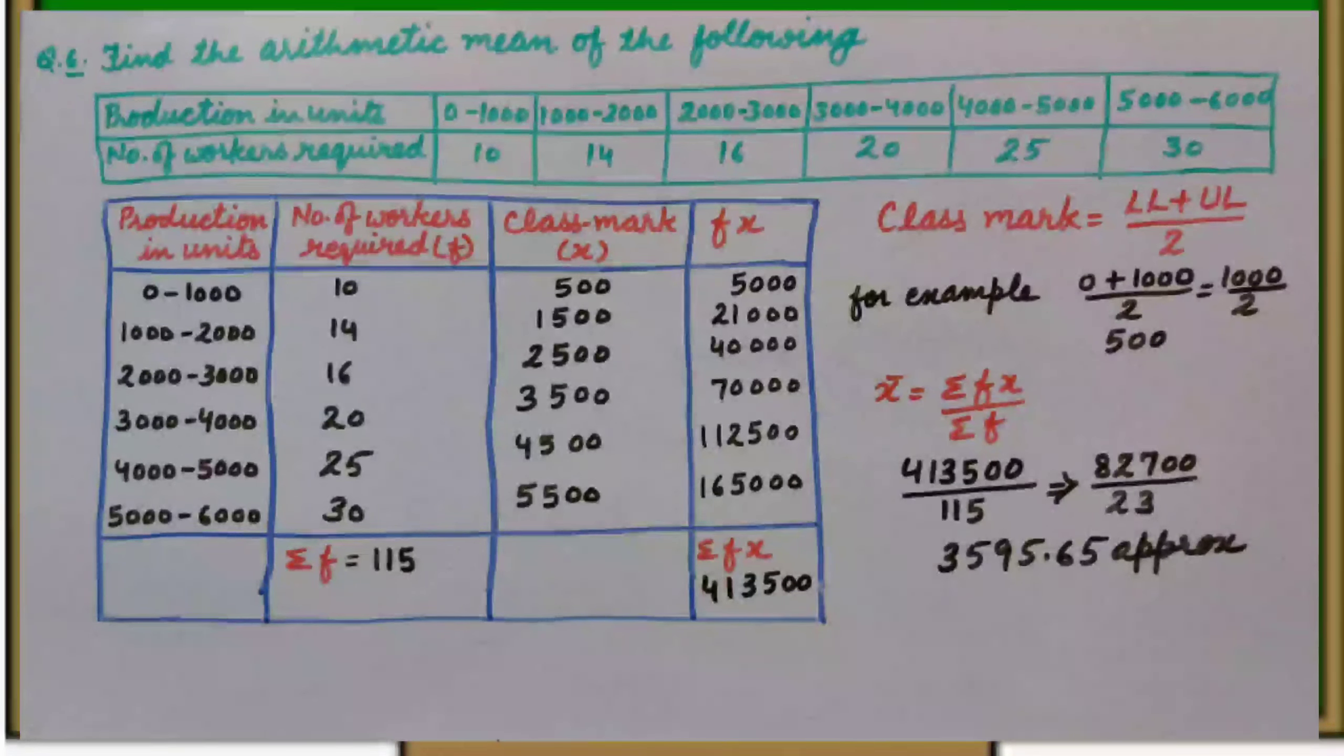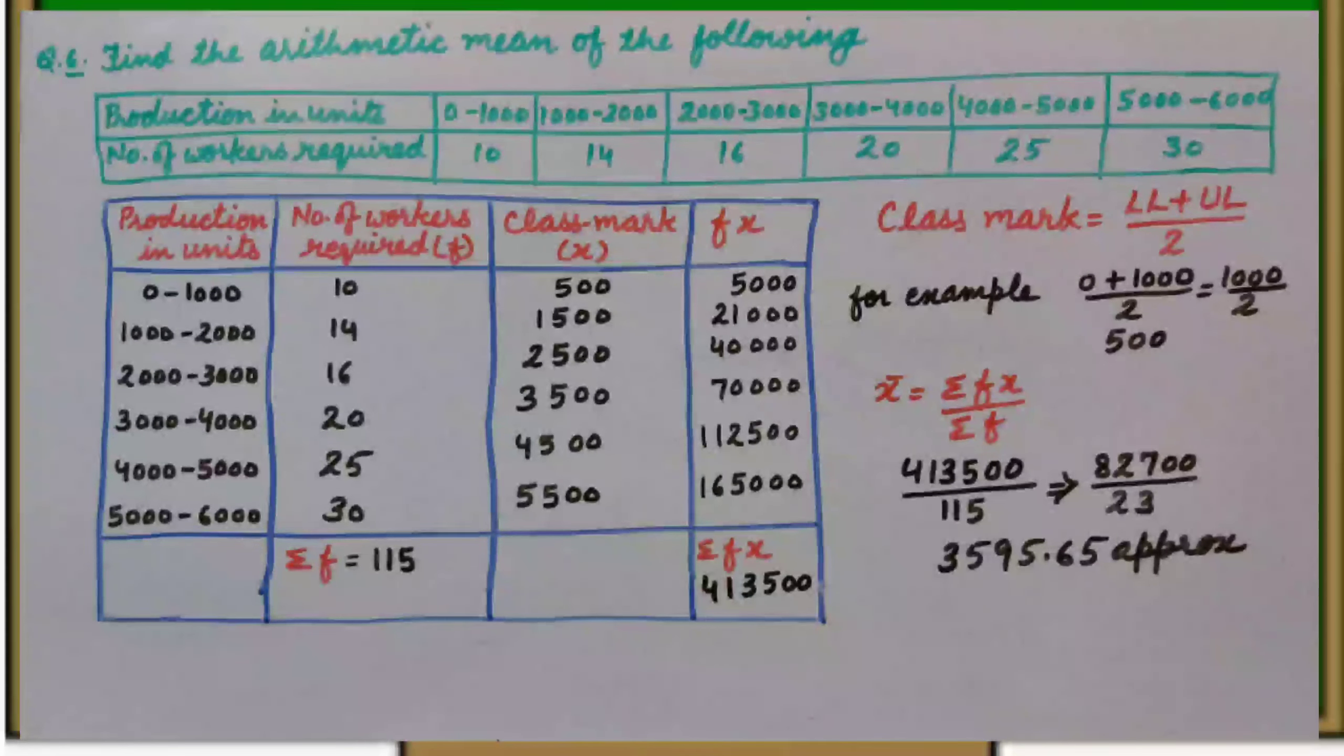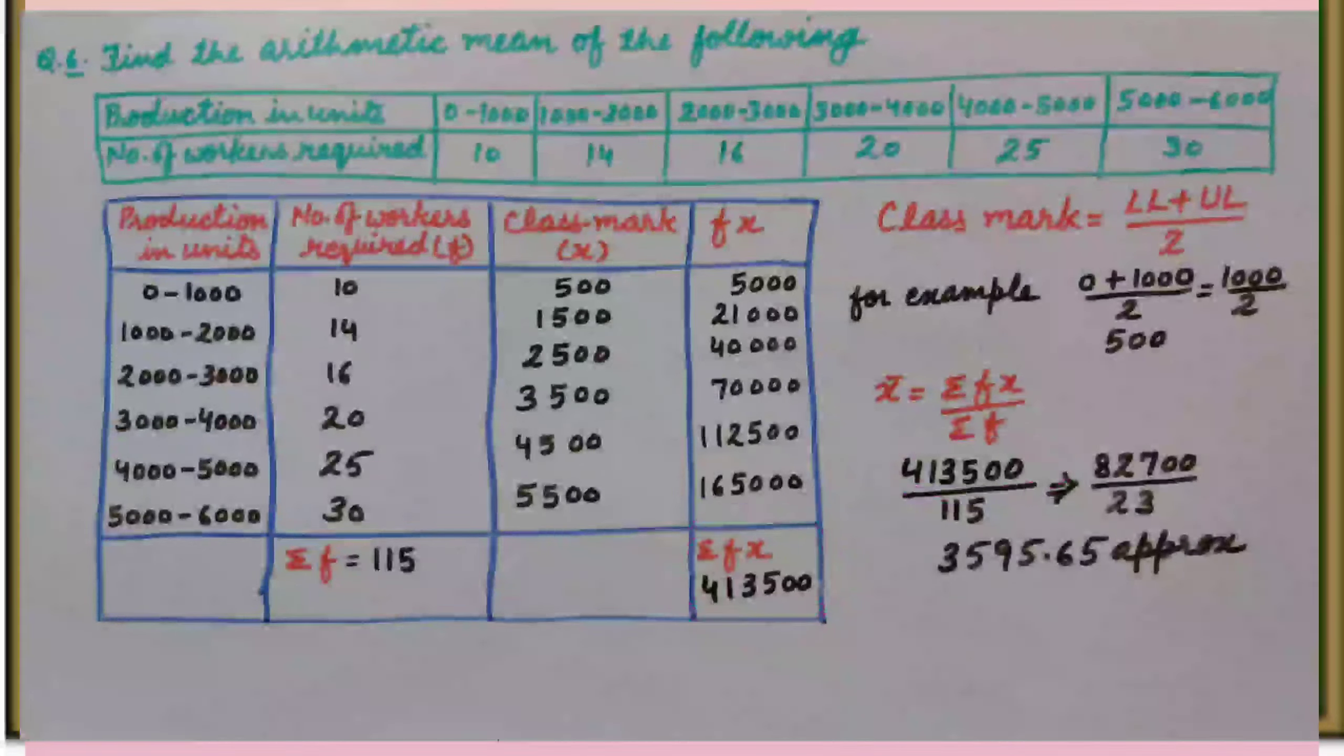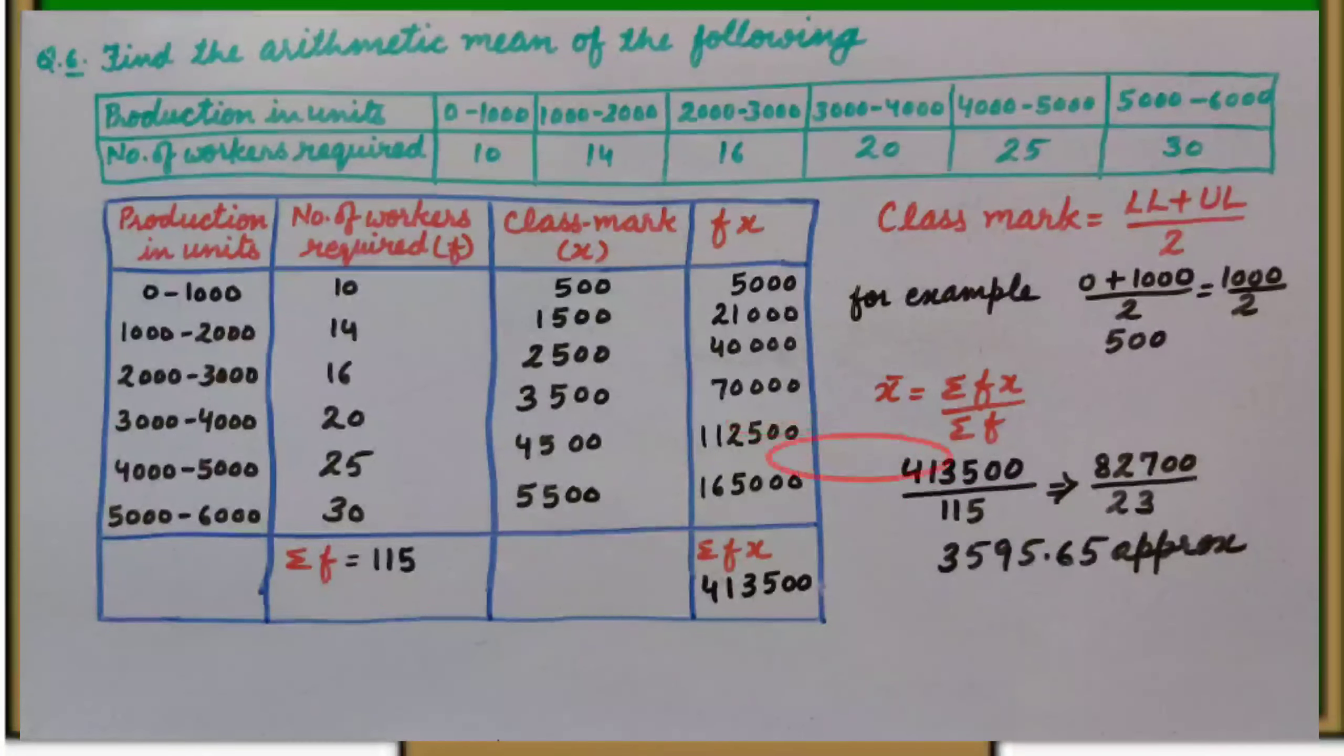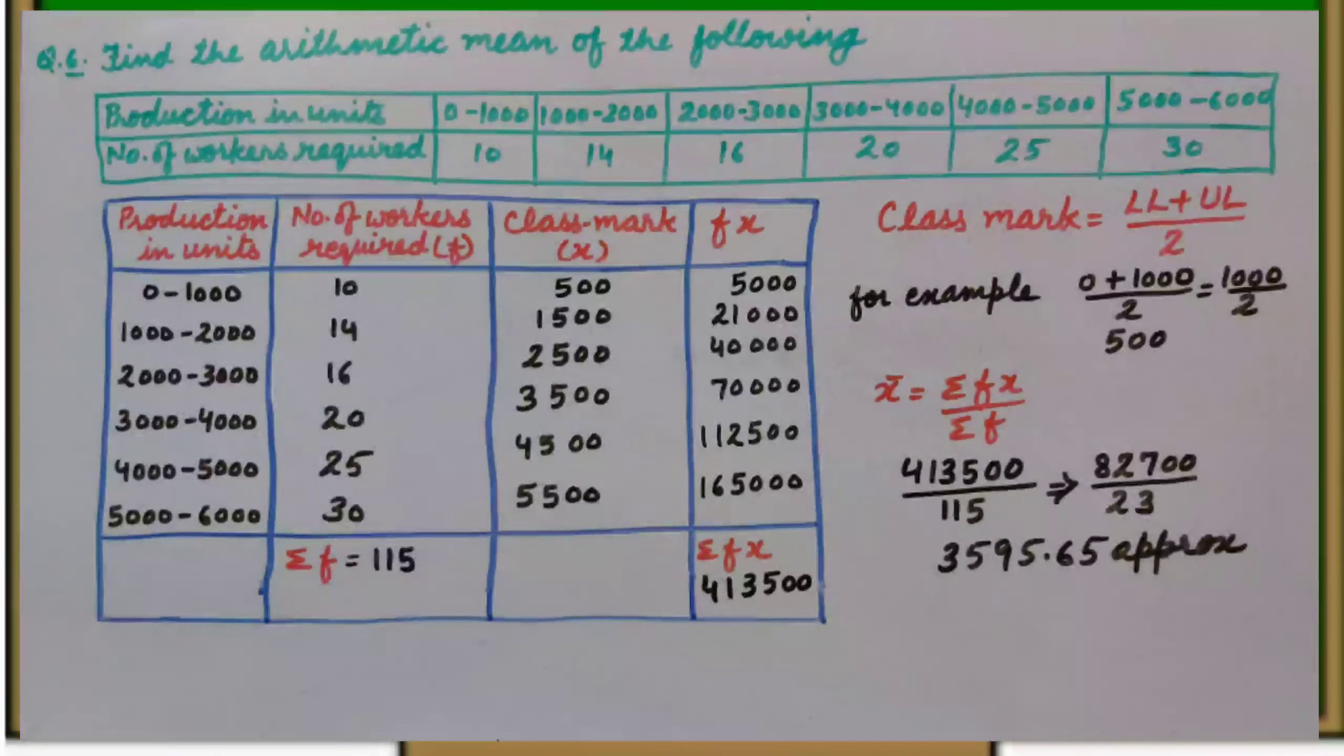So, we will use formula for mean that is x bar equal to sigma fx upon sigma f. Sigma fx is 413,500 and sigma f is 115. So, mean is 3595.65 approximately.